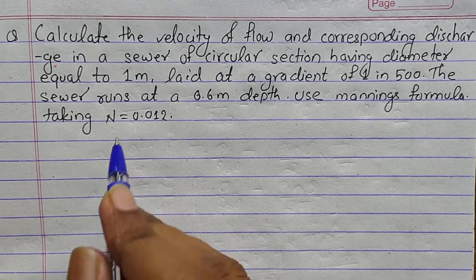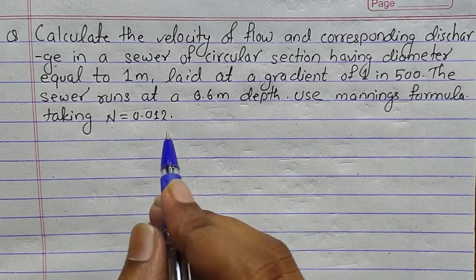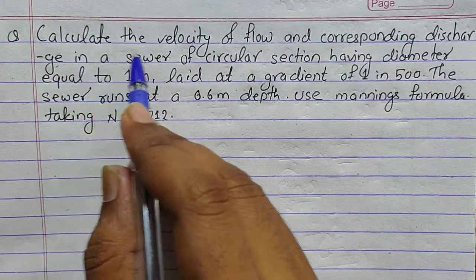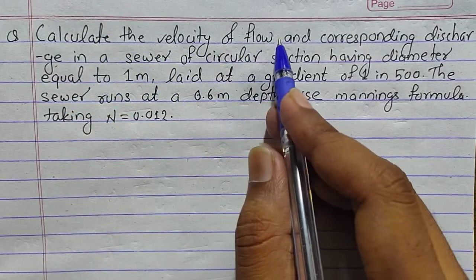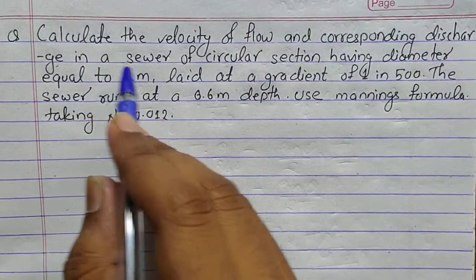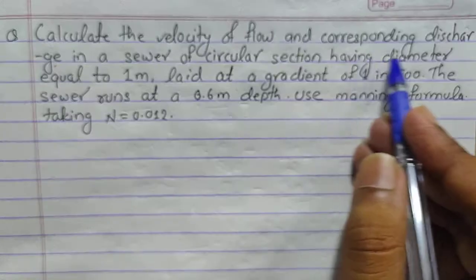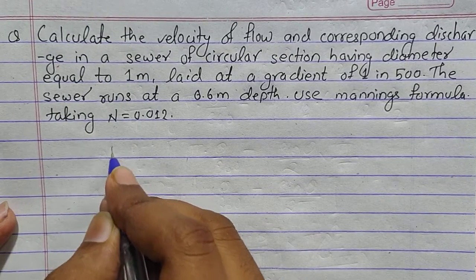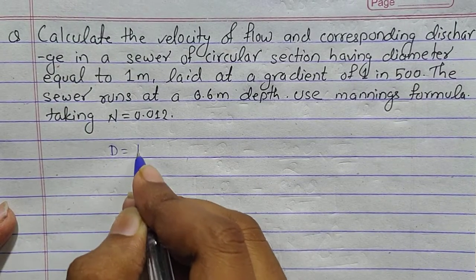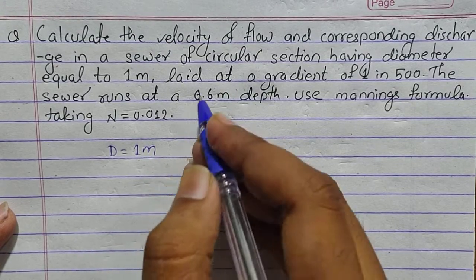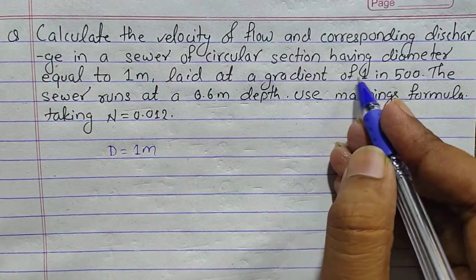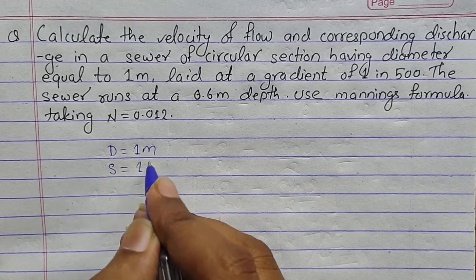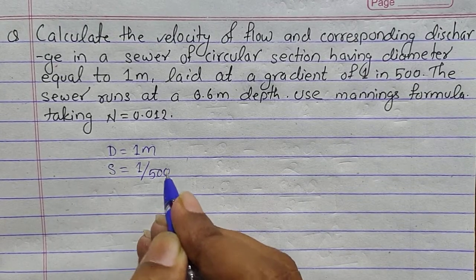Let's point out what we are given in the question. We are asked to calculate the velocity of flow and corresponding discharge in a sewer of circular section having diameter D equals to 1 meter, laid at a gradient of 1 in 500, meaning S equals to 1/500.